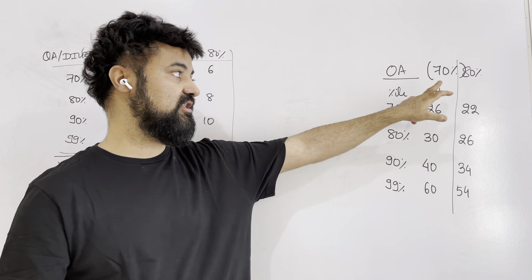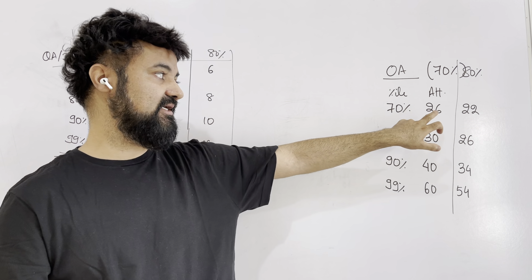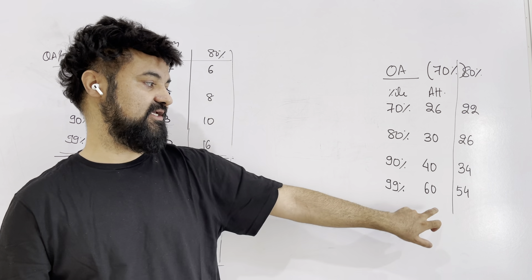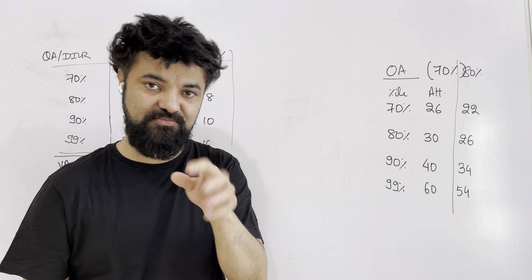So if you maintain an accuracy of 70 percent, you need 26 question attempt for 70 percentile, 30, 40, 64, 99 percentile, that should be your target.